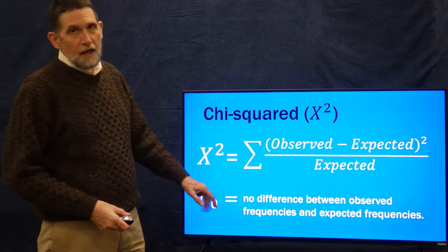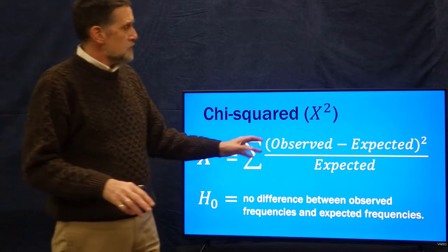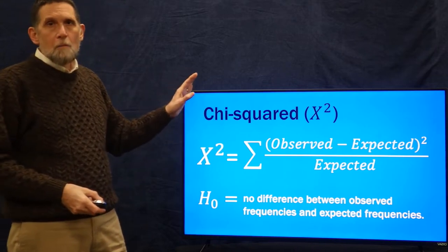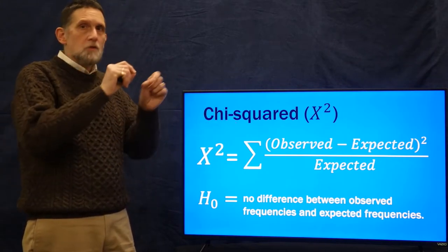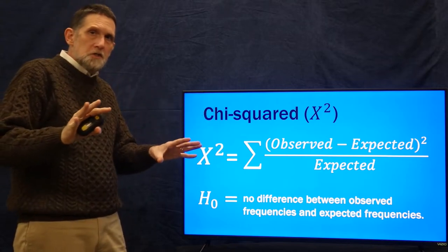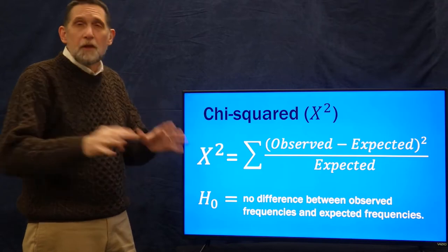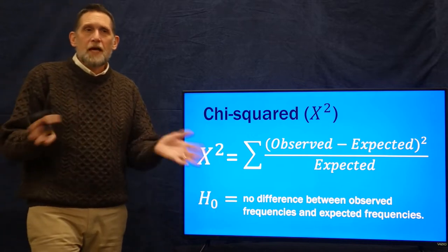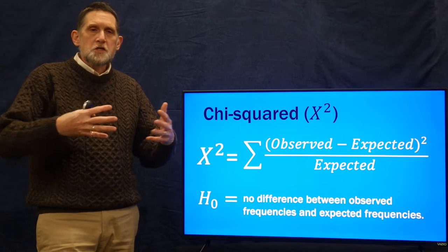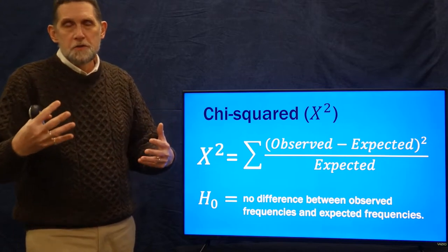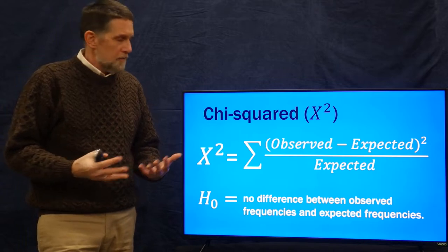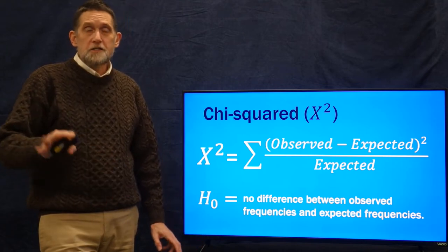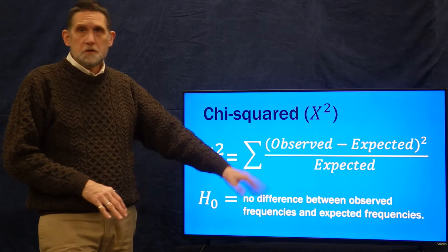In chi-squared, the null hypothesis is always that there's no difference between the observed values in a table and what would be expected by chance. Essentially, the null hypothesis is that the pattern is random — that what you see in the cross-tabulation of two nominal variables is just a random pattern based on the frequencies of the various traits in the population. The research hypothesis, then, is that there is a pattern. Null hypothesis: no pattern.